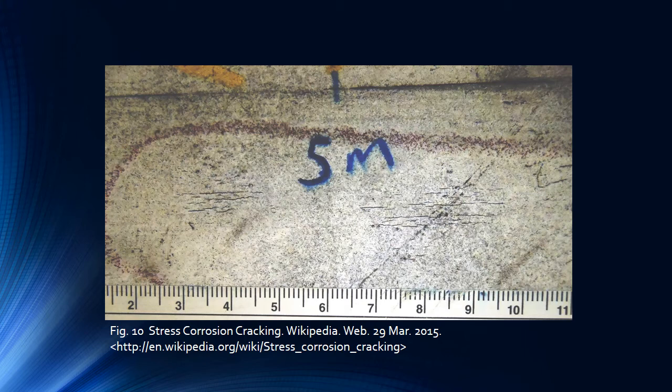Here is an example of a couple of clusters of stress corrosion cracks. This image utilizes magnetic particle inspection for clarity of the image.